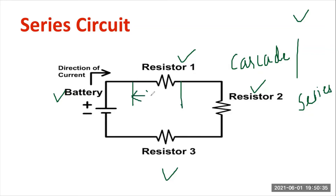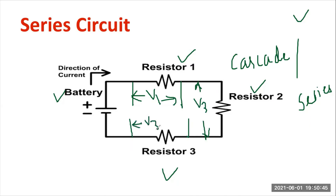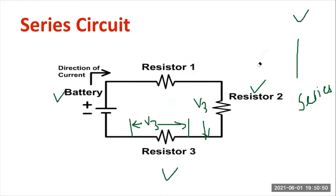The voltage across R1 may be called V1, across R2 it will be V2, and the voltage across resistor 3 will be V3. Voltage will be different and the current will be the same in the case of a series circuit.